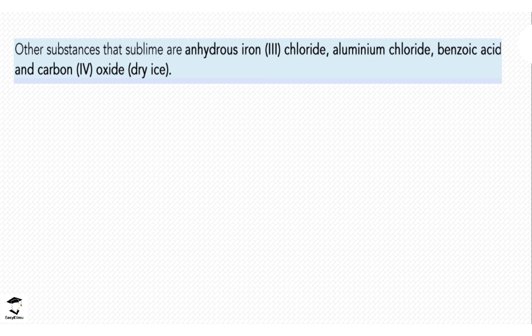Some of the compounds that can sublime are anhydrous iron-3 chloride, aluminium chloride, benzoic acid, and carbon-4 oxide or dry ice. This dry ice is very common. We are going to discuss it later in carbon and its compounds, but these are other substances that can sublime. Make sure you can be able to remember this because they can be used in place of the iodine in our experiment.